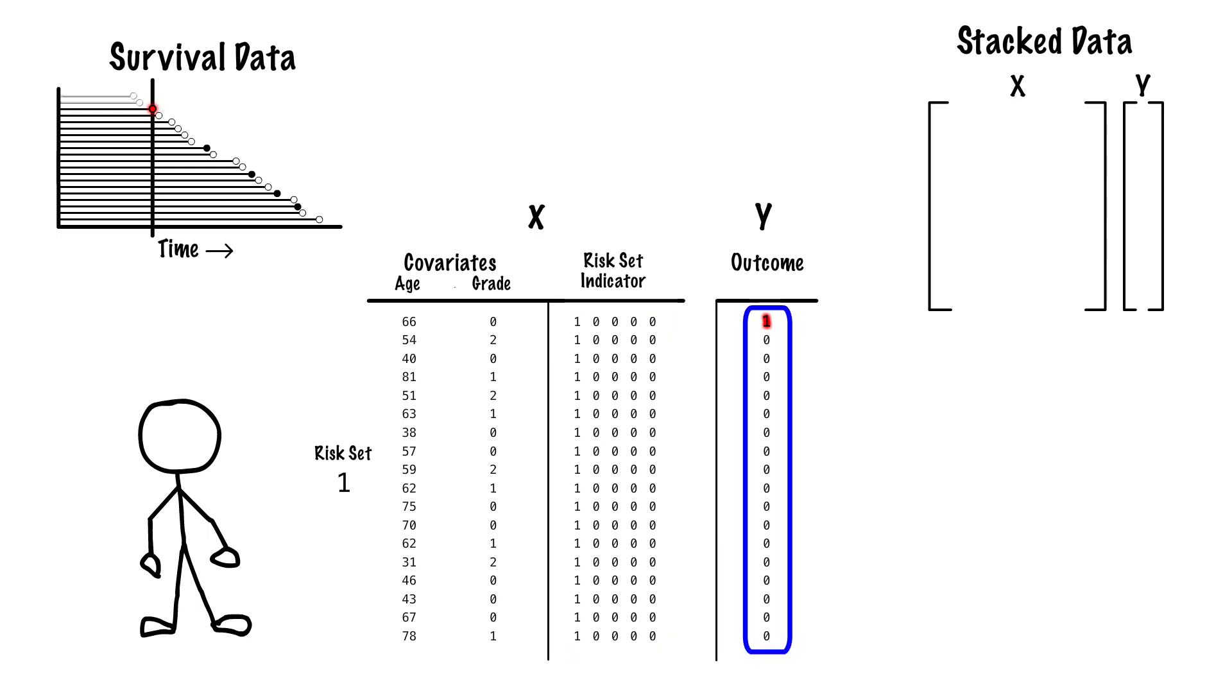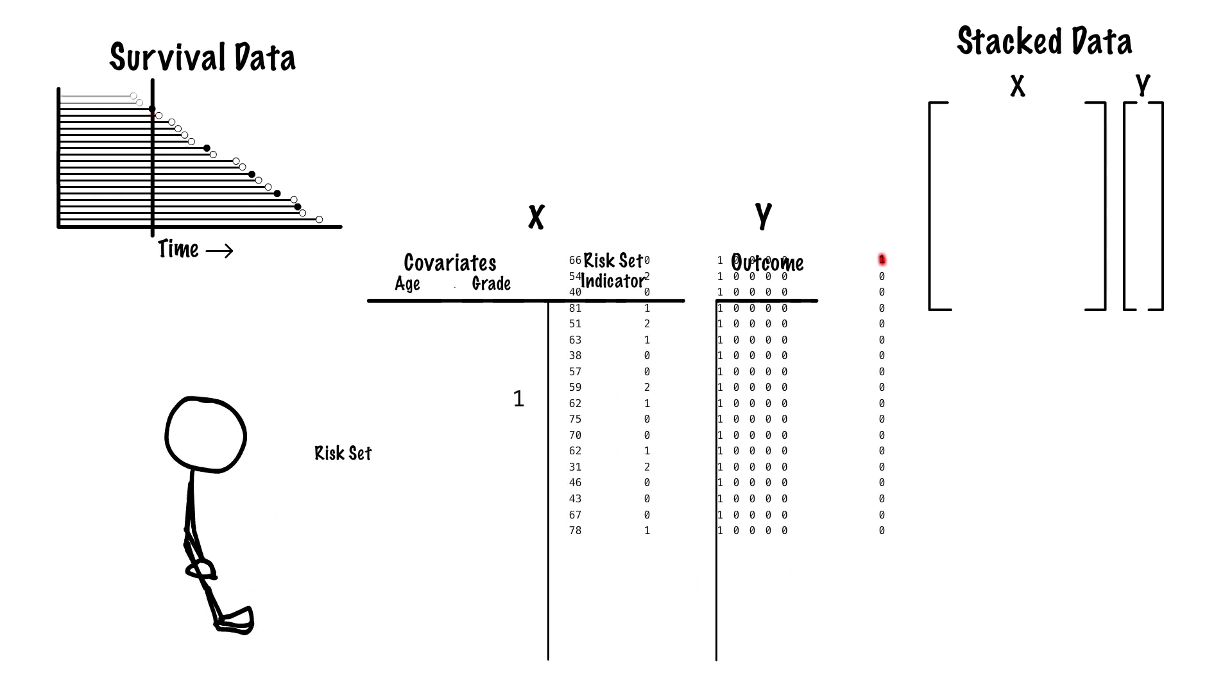Our outcome vector tells us which subject had the event at this time. Our data matrix and outcome vector will become the first block in our stacked data.